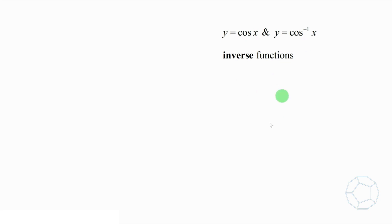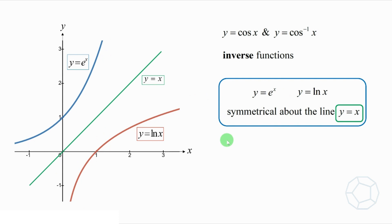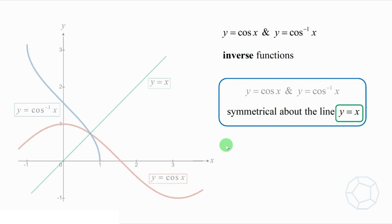Consider y equals to e to the power of x and y equals to log x. We know that the exponential graph and the log graph are symmetrical about the green line y equals to x. So, the same argument applies to our case now. The graphs of y equals to cosine x and y equals to arccosine x are also symmetrical about the line y equals to x.